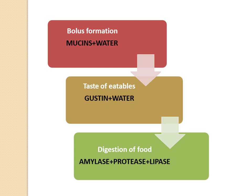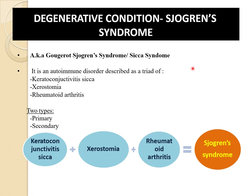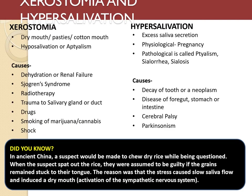Applied aspects of salivary secretion include Sjögren's syndrome, also called sicca syndrome — an autoimmune disorder described as a triad of keratoconjunctivitis sicca, xerostomia, and rheumatoid arthritis, existing in primary and secondary types. Xerostomia refers to dry mouth or cotton mouth due to hyposalivation, while sialorrhea refers to hypersalivation — present physiologically in pregnancy and pathologically called ptyalism or sialosis. Causes of xerostomia include dehydration, renal failure, Sjögren's syndrome, radiotherapy, and drugs. Causes of hypersalivation include tooth decay, neoplasms, disease of the foregut, cerebral palsy, and Parkinsonism.